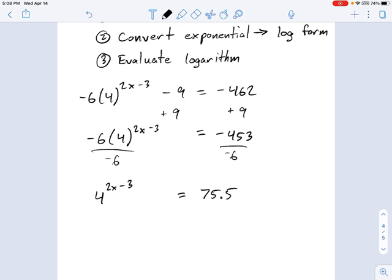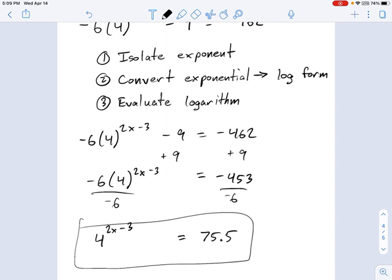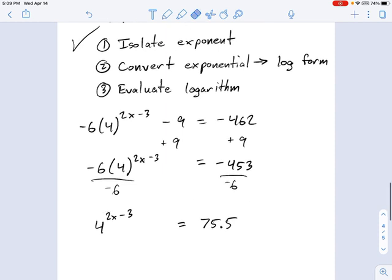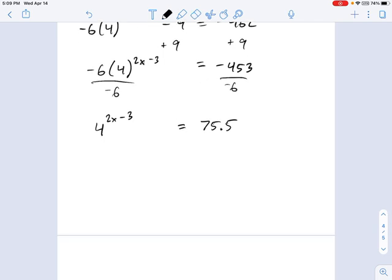So now what I want to do is find some way to deal with this thing. And if we go back to our list, what was number 2 on the list? I've isolated the exponent, and now I need to convert the exponential to logarithmic form. Let's see how we do that. If you remember how we convert logarithms, the basic definition of logs was, if you have a base raised to an exponent that equals the argument, and in log form, that's this: log base b of the argument equals the exponent.